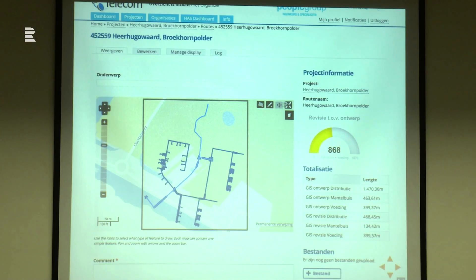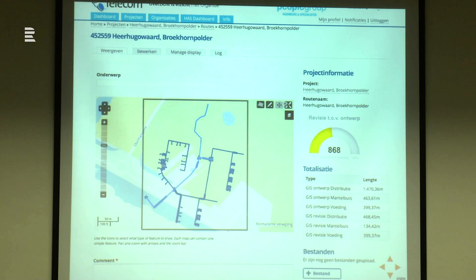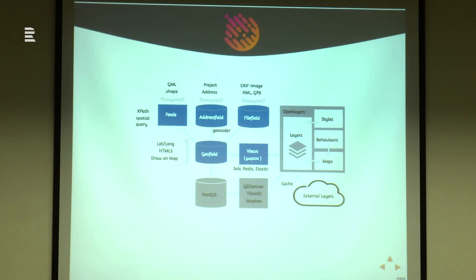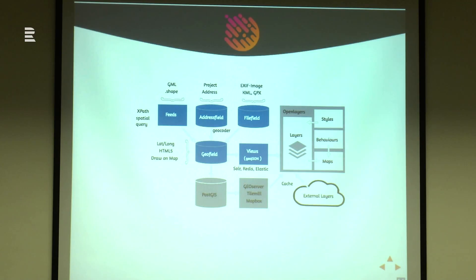If you zoom out a little bit in a neighborhood, you see the trenches where it's dug — light blue is where it's actually constructed, and dark blue is where it is designed. So you can track how far you are with your process of putting stuff in the ground.